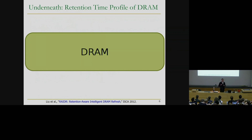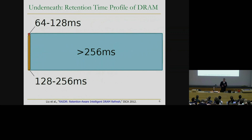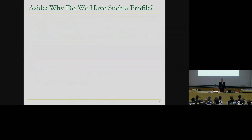All the cells, we treat them like they can retain data for the same amount of time. But in reality, DRAM retention time profile looks very different. As you can see here, only a very small number of cells actually can retain data between 64 to 128 milliseconds - those are the cells that really need to be refreshed at 64 milliseconds. But the majority of the cells can retain data for much longer, like even seconds. So what can we do with such profiles? If you know for every single cell how long it can retain its data, can we do something about it? But first, let's discuss why we end up with such a profile in today's DRAM.